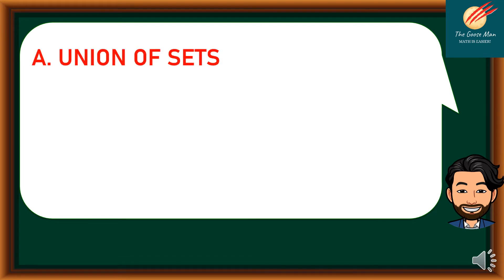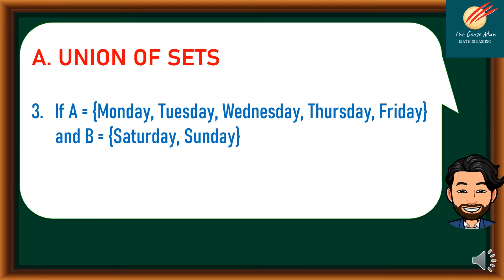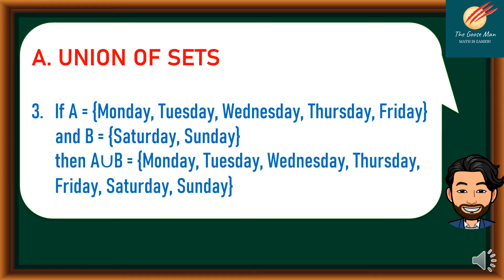Third example of union of sets: if A is equal to {Monday, Tuesday, Wednesday, Thursday, Friday}, while B is equal to {Saturday and Sunday}. So A union B is Monday, Tuesday, Wednesday, Thursday, Friday, Saturday, and Sunday.